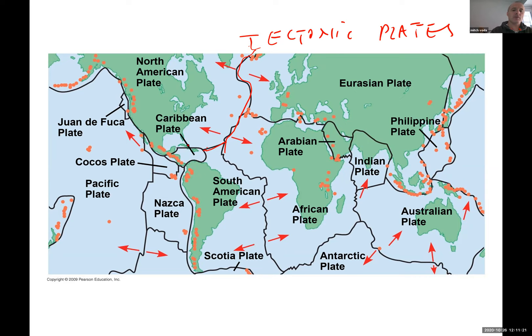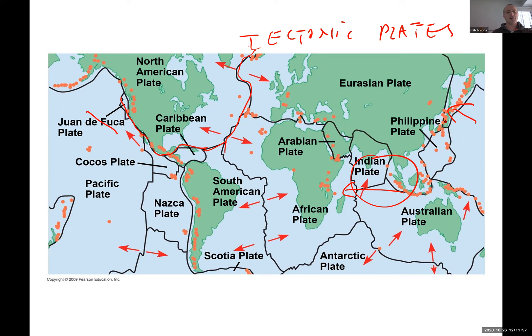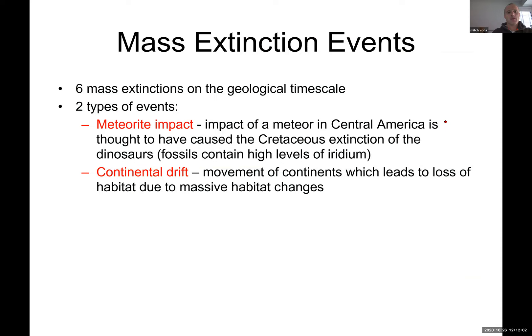The arrows show how tectonic plates move. North America will eventually meet the Eurasian plate; South America will end up next to Africa; Australia will end up somewhere near Japan — millions of years from now, not in our lifetime. Out of the six mass extinctions, there were two types of events: meteorite impact and continental drift, both of which led to extinction and evolution.